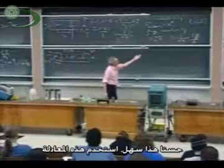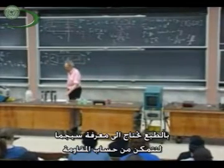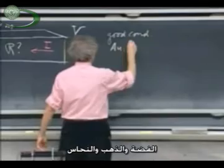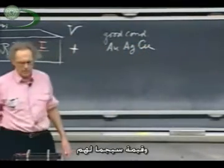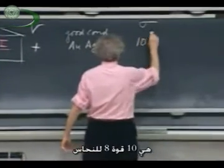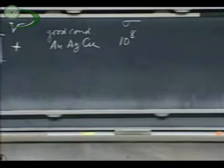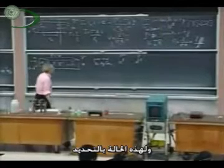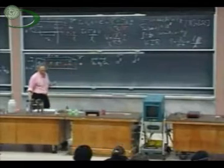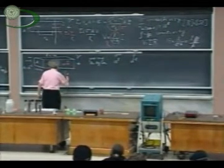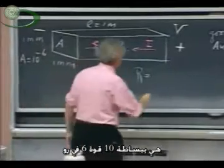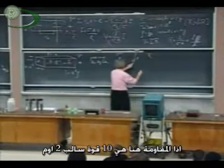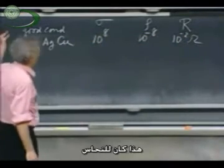Well, very easy. You take these equations, you know L and A, so if I tell you what sigma is, you can immediately calculate the resistance. Let's take first a good conductor. Silver, gold, and copper are very good conductors. They have values for sigma of ten to the eight — we just calculated that for copper. So rho would be ten to the minus eight. Since A is ten to the minus six, the resistance R is simply ten to the sixth times rho, because L is one meter. The resistance R is ten to the minus two ohms — one hundredth of an ohm — for this material, if it were copper.